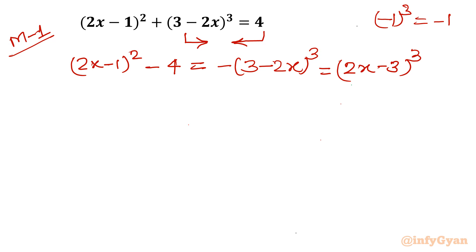So multiplied with each term minus 1. Now I can write this 4 as 2². So let me write here, (2x - 1)² - 2² = (2x - 3)³.